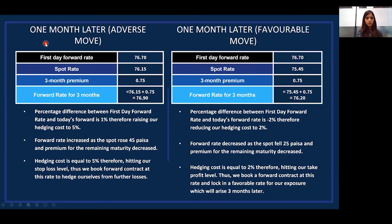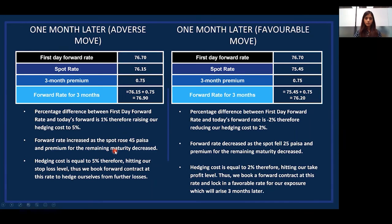In a case where one month later the currency moves in an adverse direction: our first day forward rate is 76.70, the spot rate comes to 76.15, and the three-month premium is 0.75. Adding spot and premium gives a forward rate of 76.90. The percentage difference between the first day forward rate and today's forward rate is 1%, raising our hedging cost to 5%. The forward rate increased as the spot rose by 45 paise while the premium for the remaining maturity decreased. Since our hedging cost hits the stop loss level of 5%, we book a forward contract and hedge ourselves from further losses.